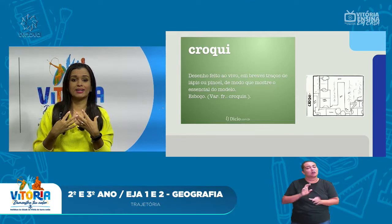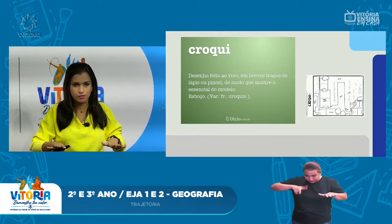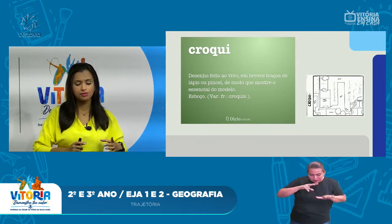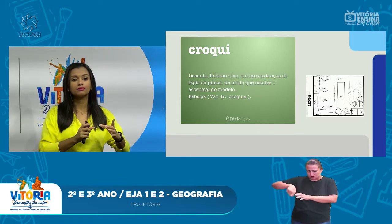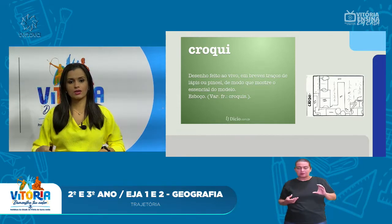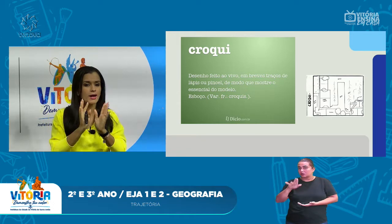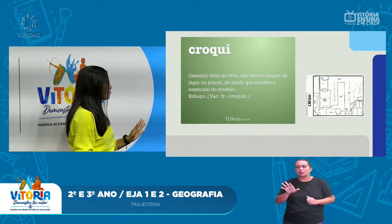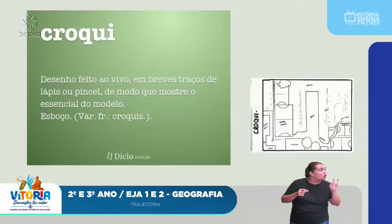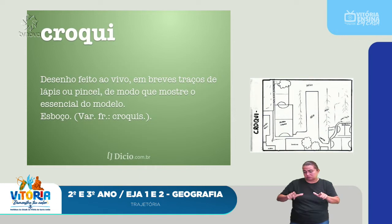I will draw it as if from a bird's-eye view — remember the previous class? The view from above, the aerial view. I will draw the living room space, the kitchen, the bedrooms. You will make a floor plan of your house, a sketch. This initial sketch or drawing is called CROQUI, because it doesn't have many measurements. It is just to represent the space. It is a drawing made quickly, in brief strokes — very simple strokes, pencil or brush — showing only the essential of the model or sketch.